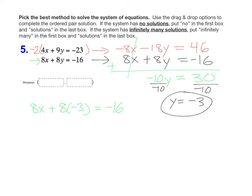Then you just crunch the numbers. Eight times negative three is negative twenty-four, so eight x minus twenty-four equals negative sixteen. Now let's get rid of that minus twenty-four by adding twenty-four on each side like that. Now we have eight x equals eight and we're one step away. Just divide by eight on each side and we get x equals one.